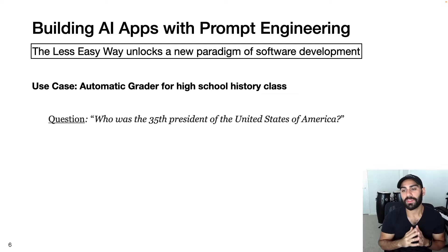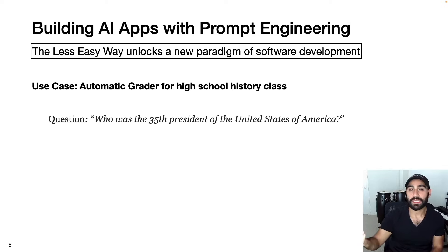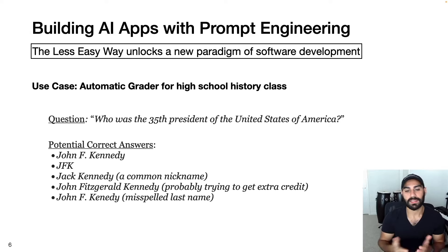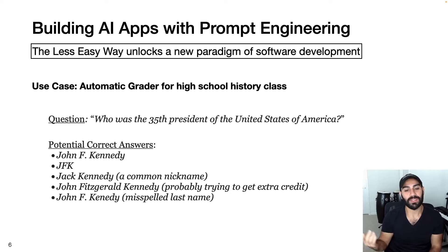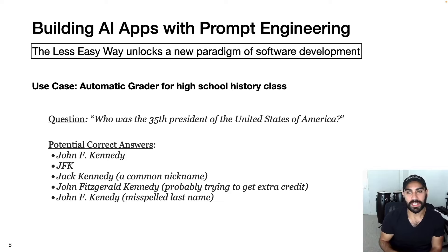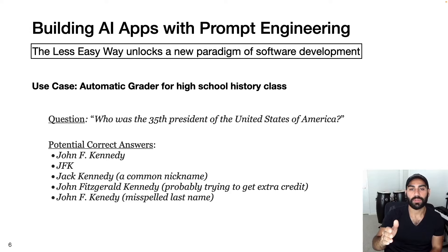Consider the question: who was the 35th president of the United States? While you might think there's only one answer — John F. Kennedy — there are many reasonable correct answers. For example: JFK, a very common abbreviation; Jack Kennedy, a common nickname; John Fitzgerald Kennedy, his full name; and even 'John F. Kenedy' where the student forgot one N. Let's see how we can make software that does this grading process automatically.